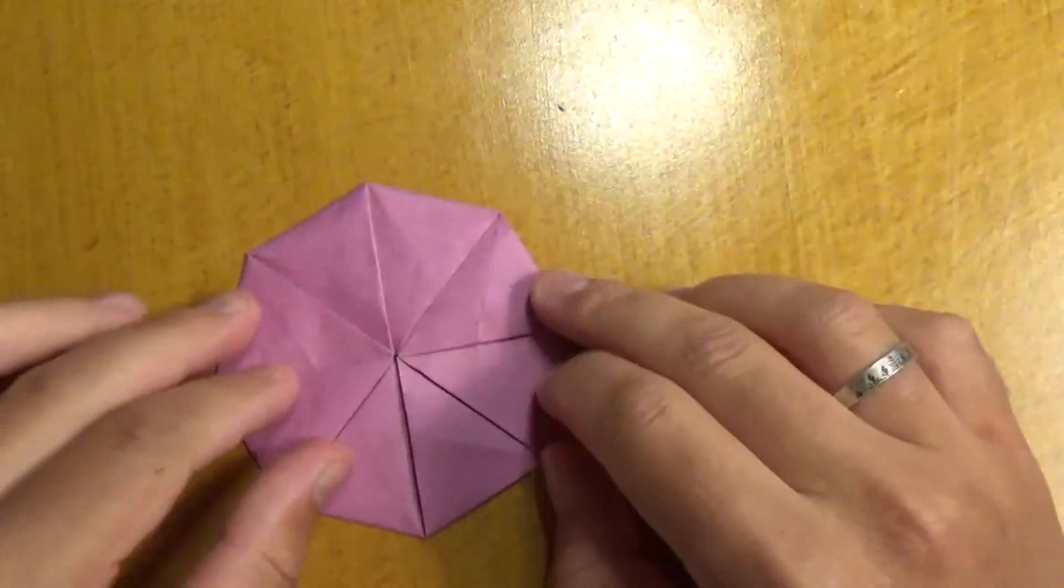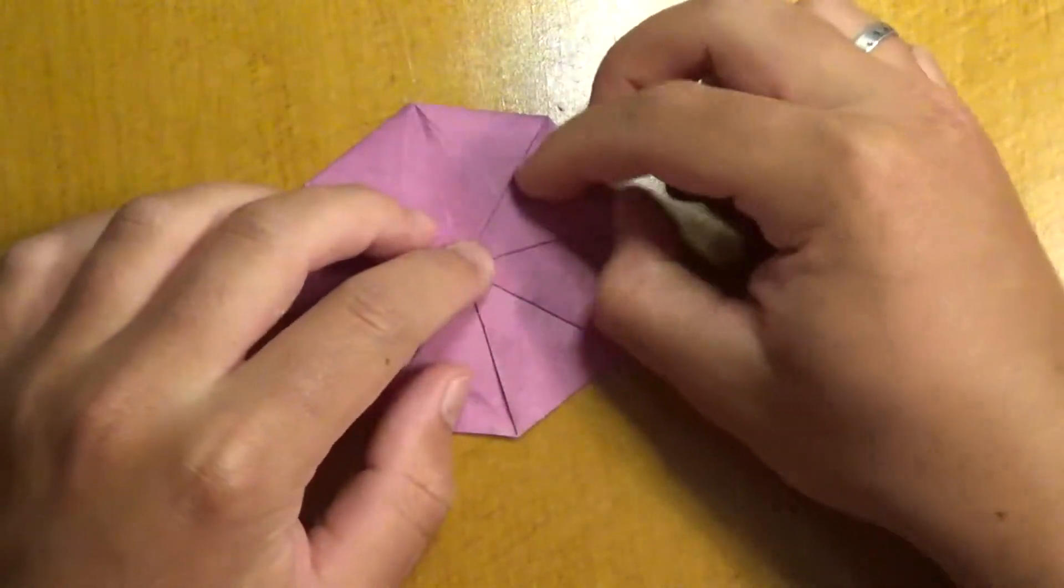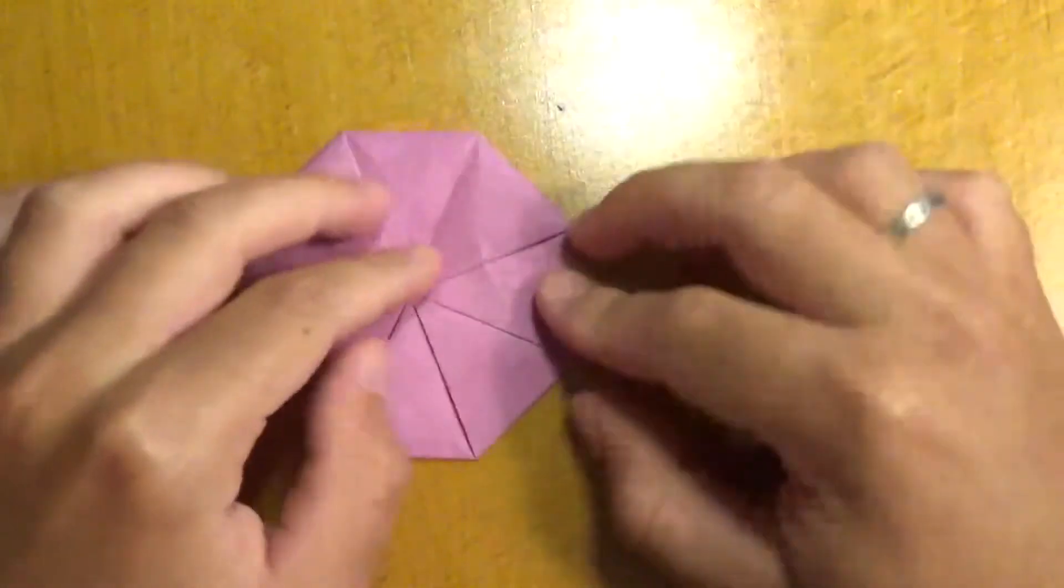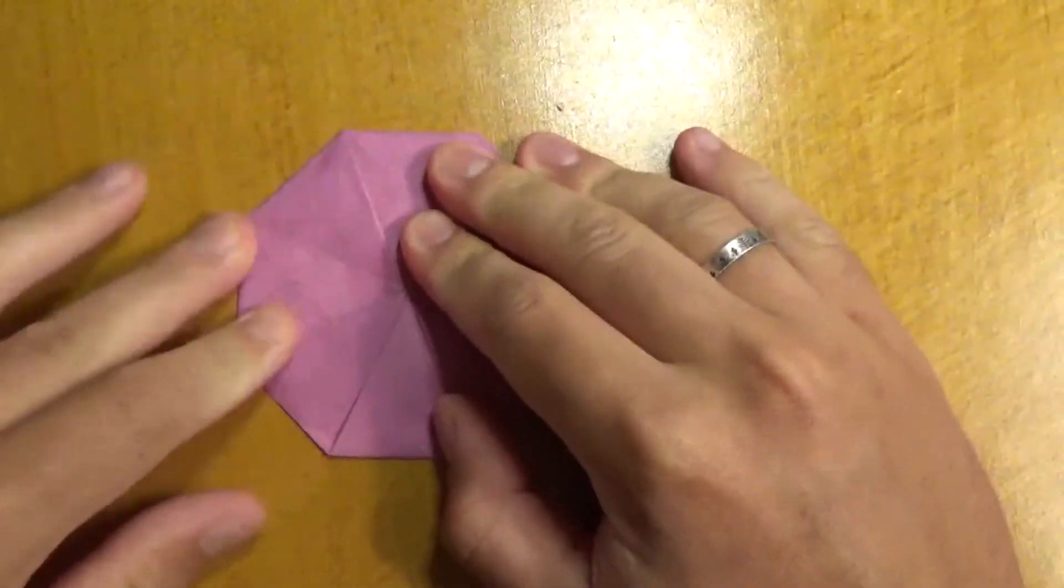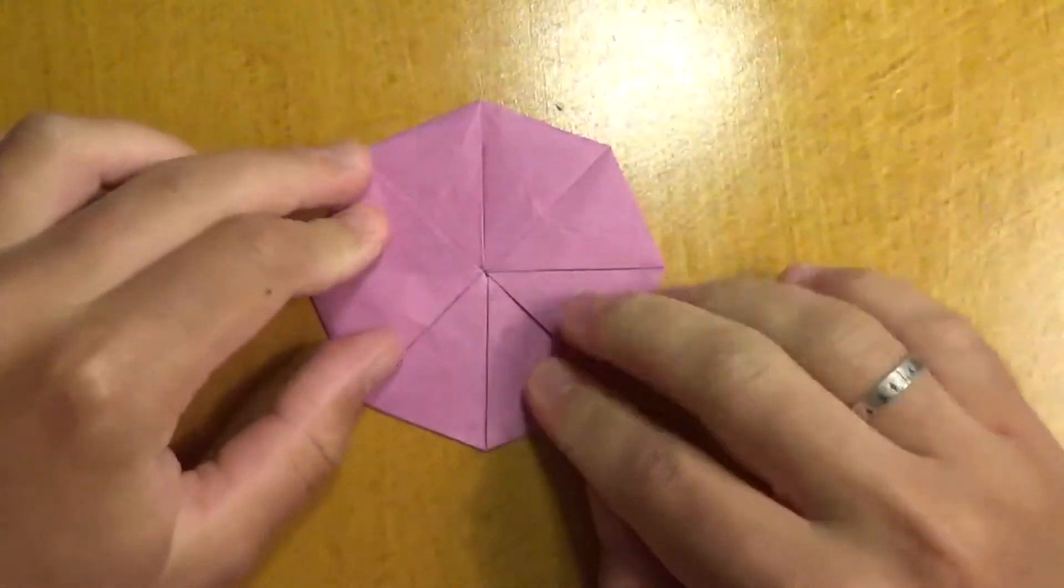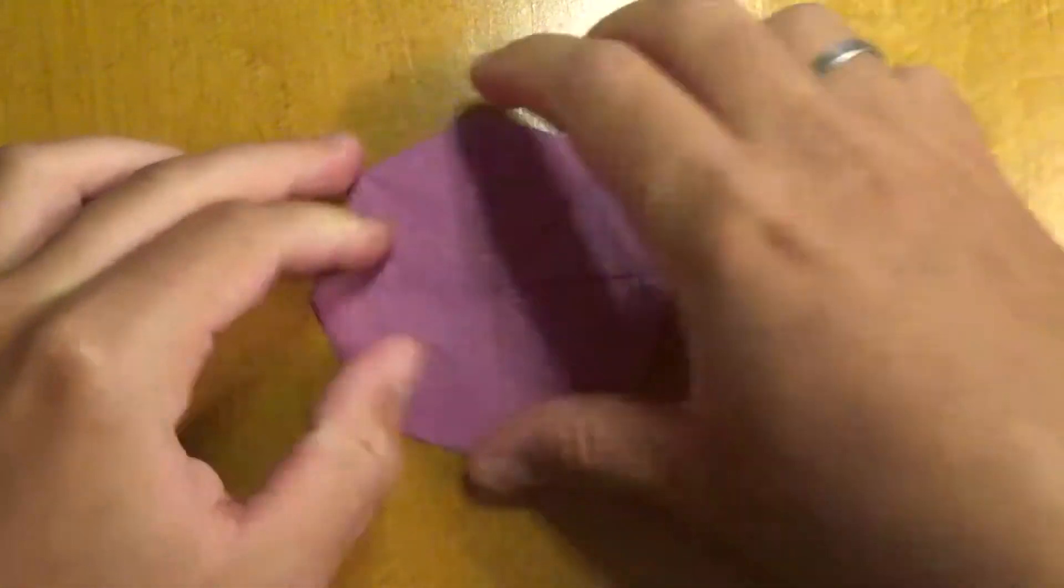And now our flicker is pretty much done. We just need to crease everything sharply. So, just like this. Okay. Like that. And just make sure it's flat. Just maybe press it against the table and make sure it's as flat as possible. Like this. All right.